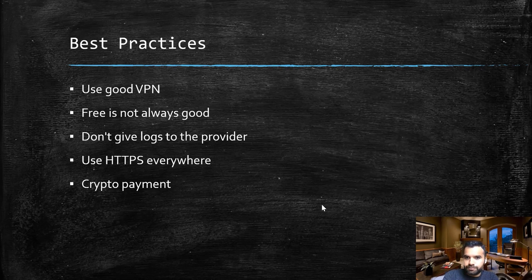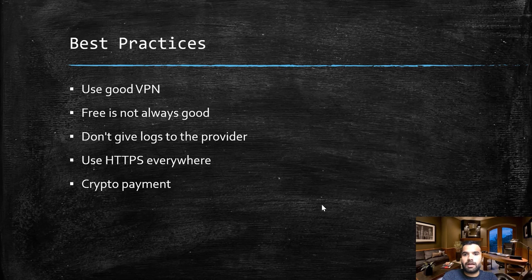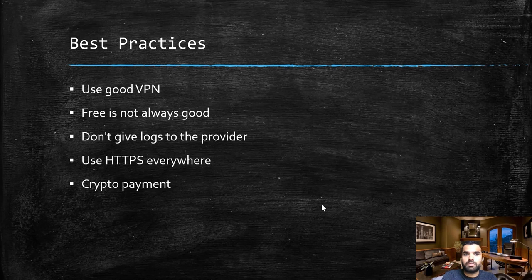Another option is to use HTTPS Everywhere — this is already implemented in Chrome, Firefox, and Safari. It's an extra layer of encryption so that anywhere you connect is always encrypted, even if the service provider doesn't offer TLS in transit. Lastly, I'd highly recommend paying for your VPN using cryptocurrency, so no one can trace back which VPN you're using or who purchased it. That's optional, but it's one of my recommendations.